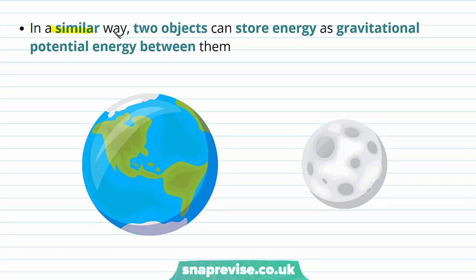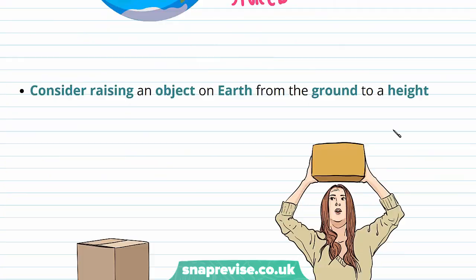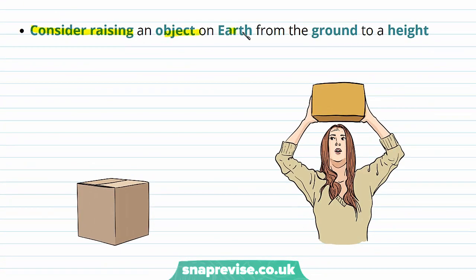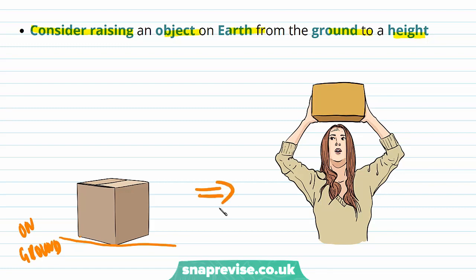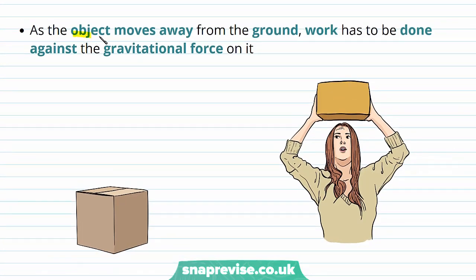In a similar way, two objects can store energy as gravitational potential energy between them. Consider raising an object on Earth from the ground to a height. Initially this cardboard box is on the ground, and sometime later it's been raised to a certain height H. As the object moves away from the ground, work has to be done against the gravitational force on it.